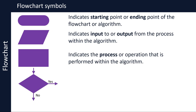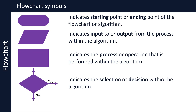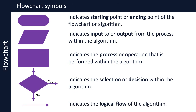The diamond symbol is used to indicate selection or decision within the algorithm. It presents a question which has only two answers — typically true or false, or yes or no. Depending on the answer, the algorithm takes one of the two paths. It always has one arrow going in and two arrows coming out, showing the two logical paths. The two answers are labelled along the two arrows. One-directional arrows link the symbols, showing the logical flow of the algorithm.